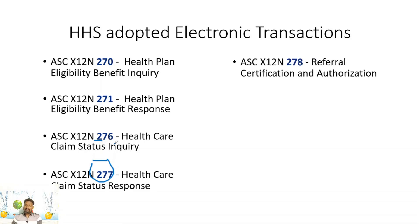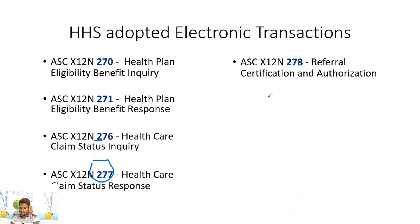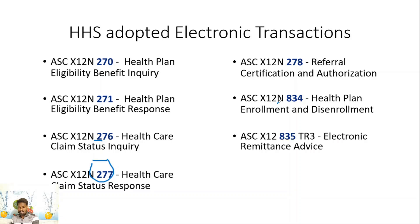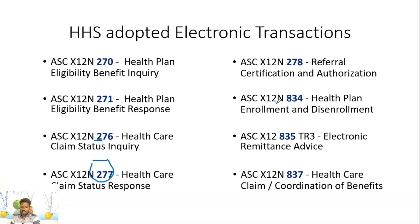Next is 278, referral certification and authorization. This transaction standard is used to request referrals and authorizations from the insurance, and the same standard is used for the response. Then 834, health plan enrollment and disenrollment — used by employers and sponsors to send employee information to the insurance plan to enroll or disenroll employees from coverage. Note that individuals cannot use standard 834 to enroll into an insurance plan. Next, 835 is electronic remittance advice, used by health plans to send payment orders to the provider's bank or to send remittance advice to the provider — used for both EFT and ERA. The last one is 837, healthcare claim, used for electronic claim submission, and can include other payer payment information when submitting to a secondary or tertiary payer.